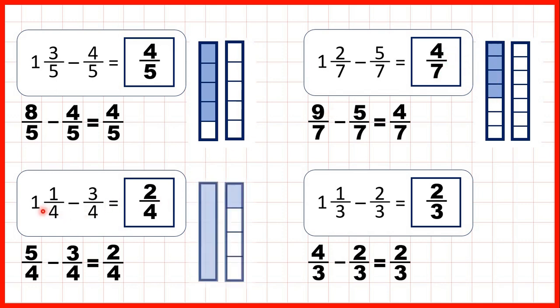Then, we had 1 and 1 quarter. We changed that to an improper fraction, so that we could take 1, 2, 3 quarters away, to give us 2 quarters as our answer.